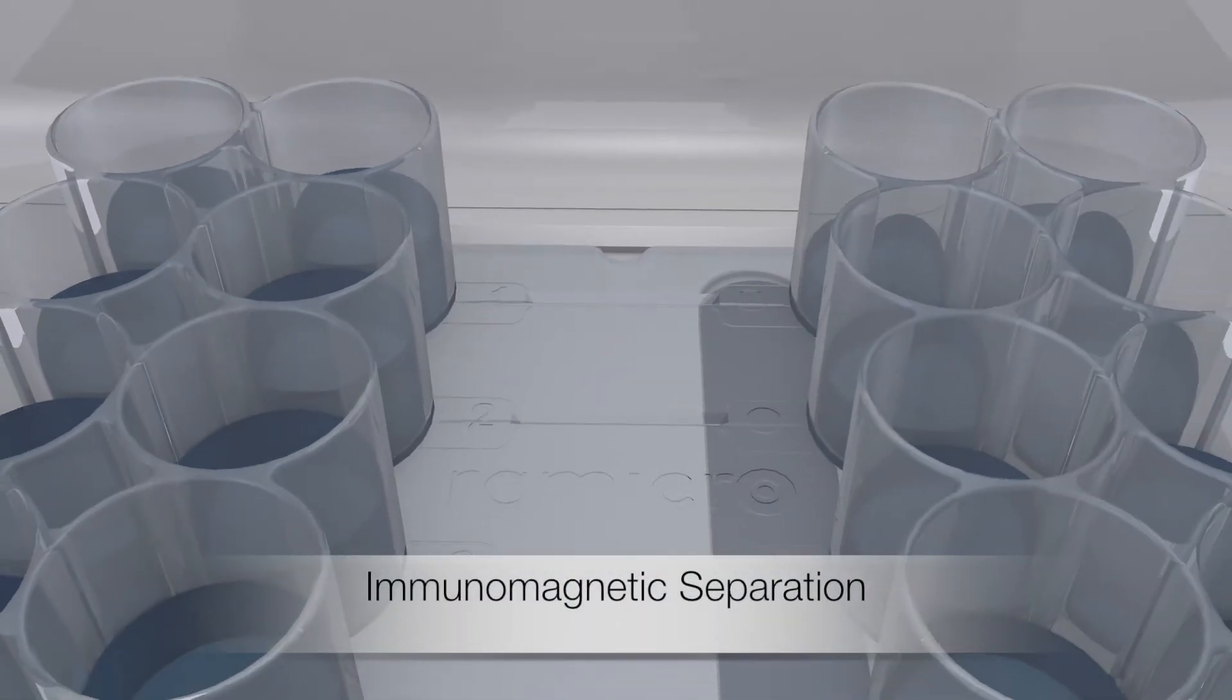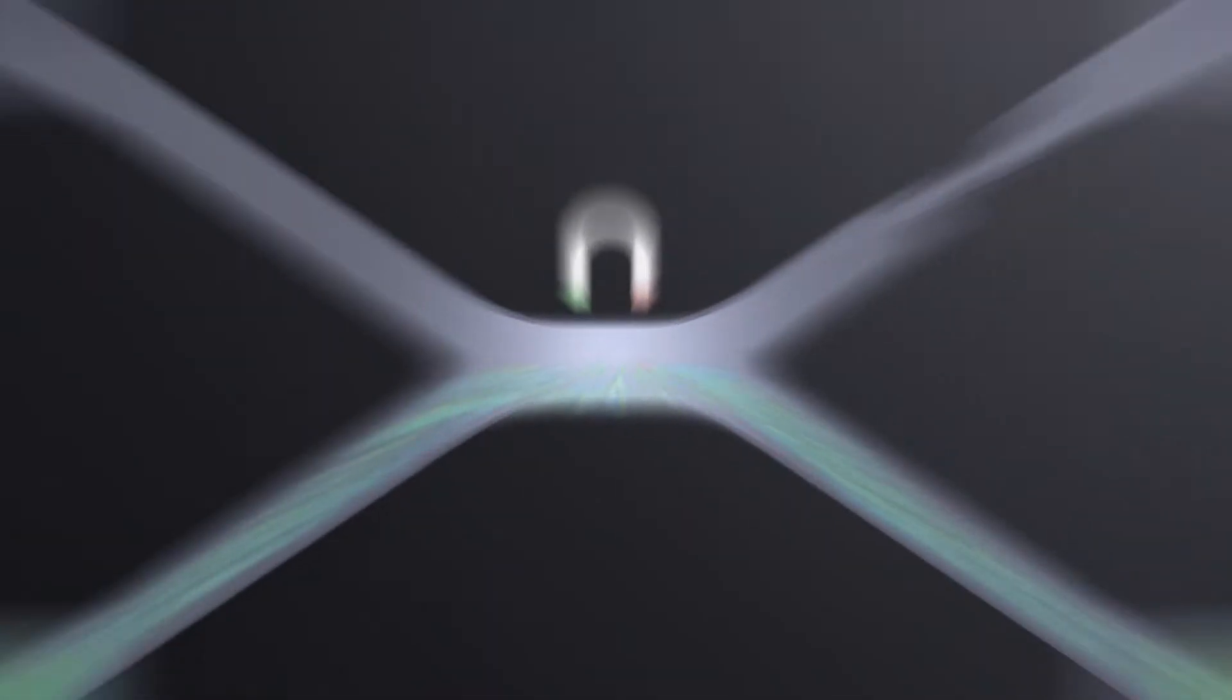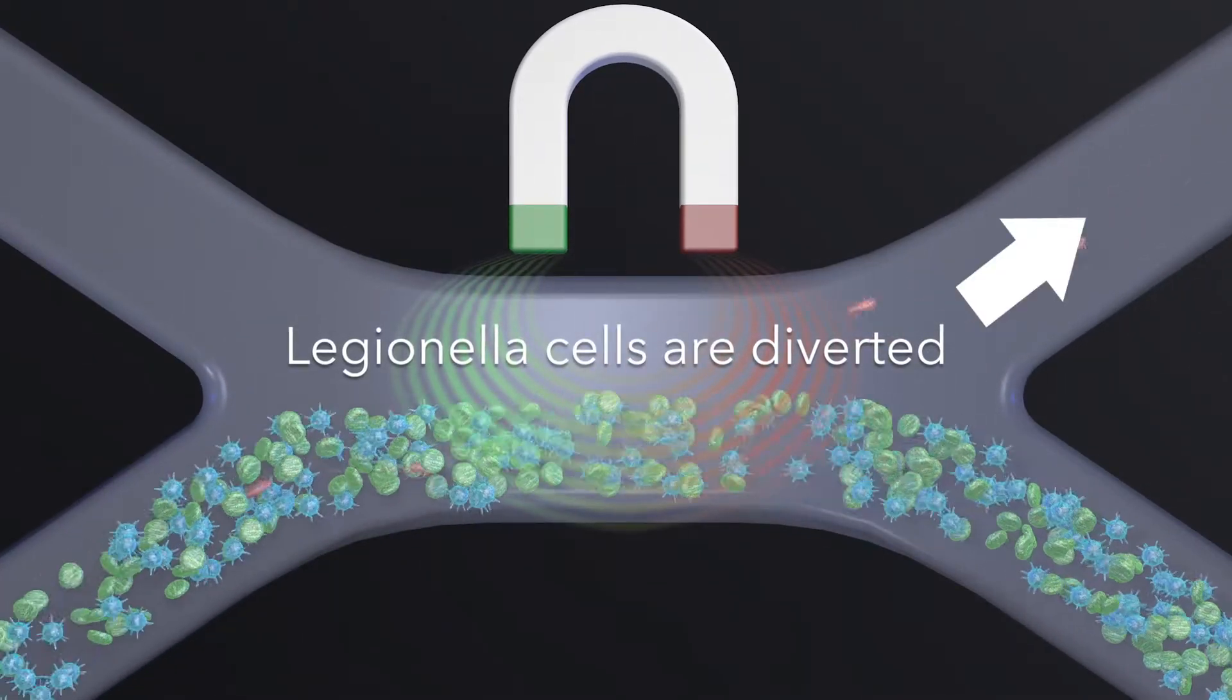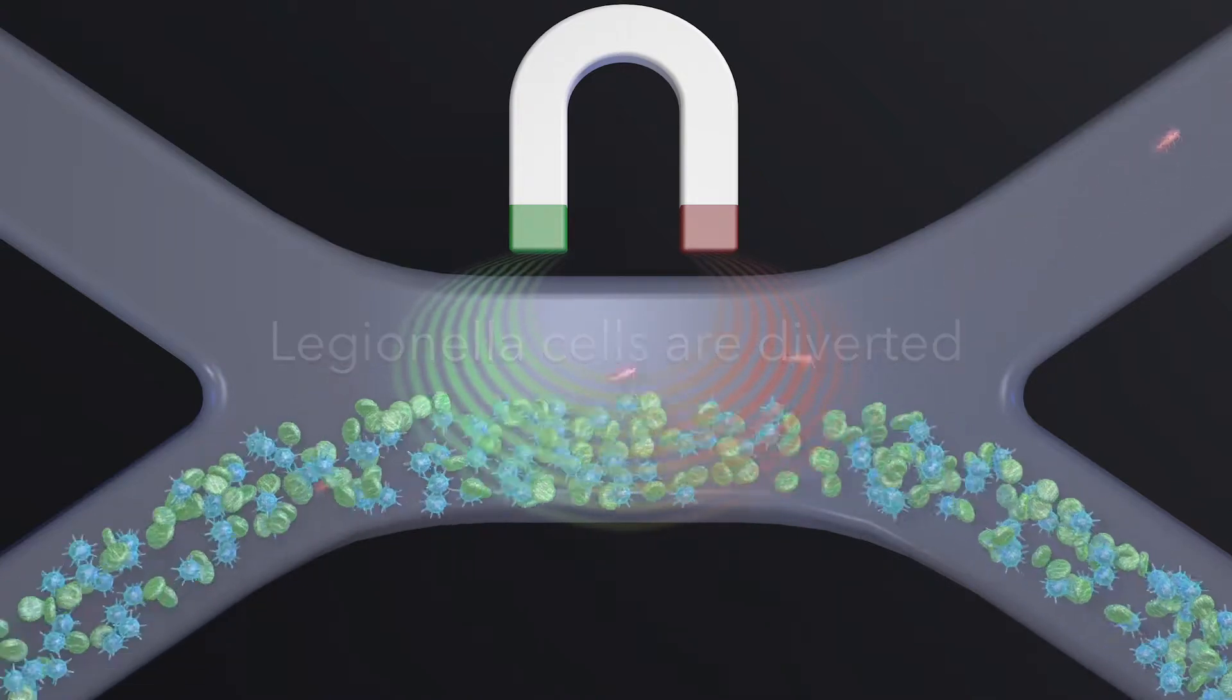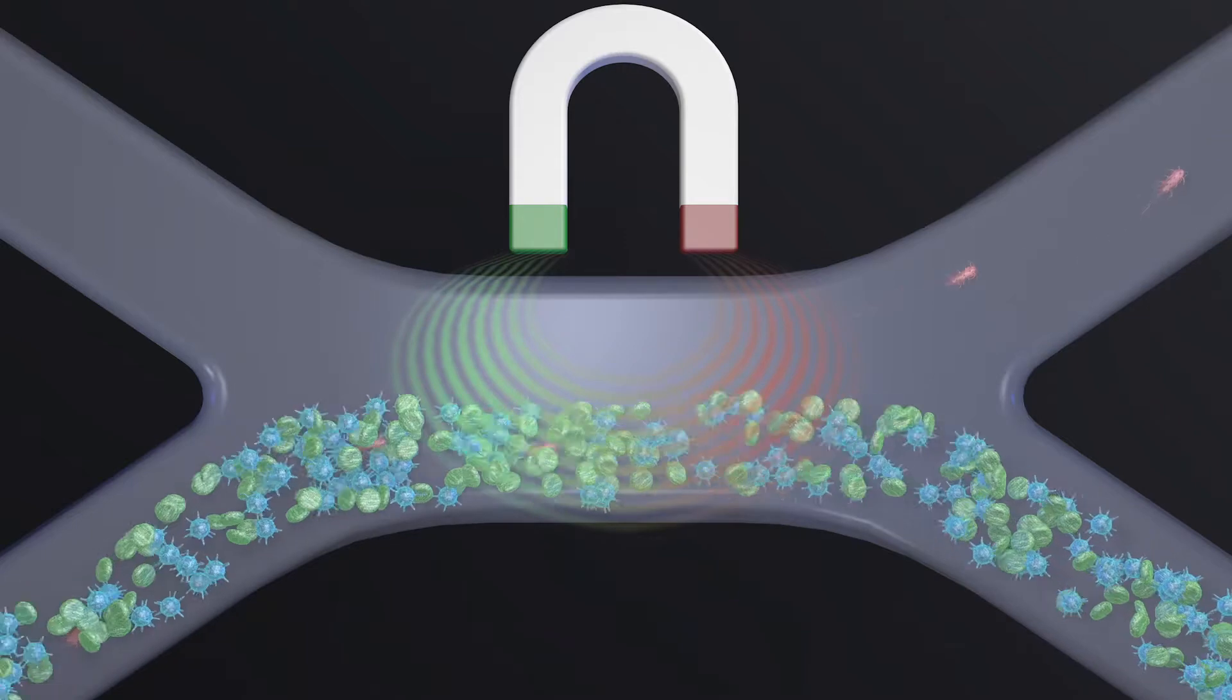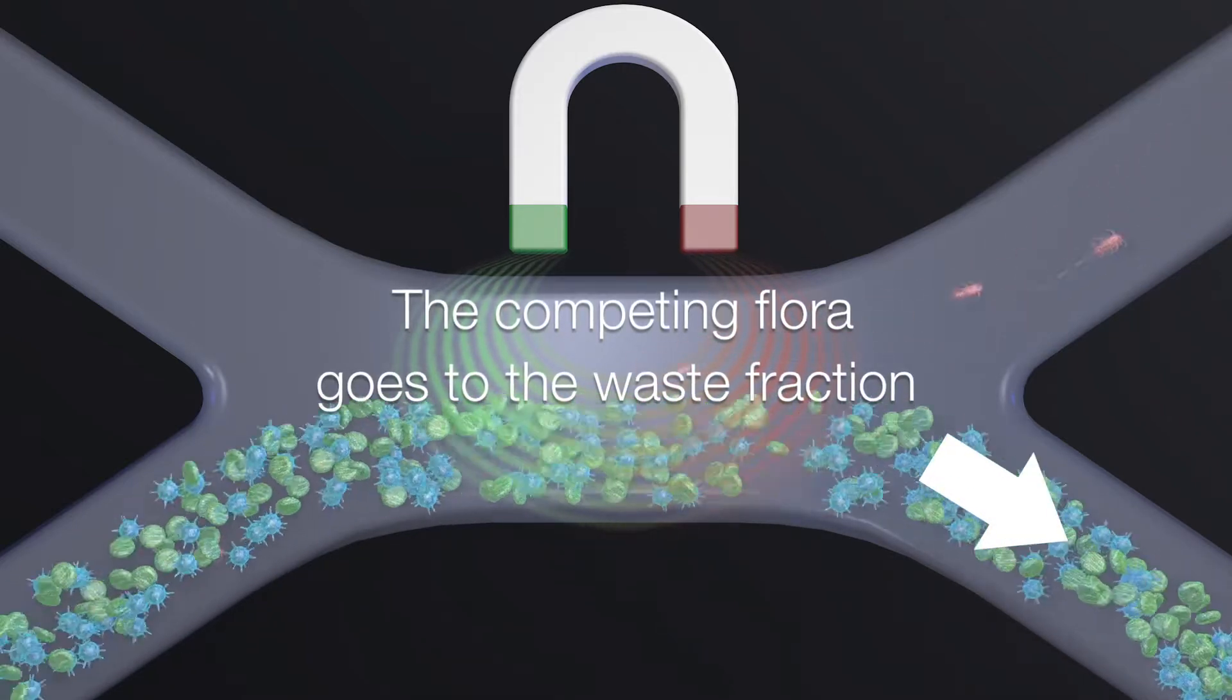The sample passes through a narrow channel in the cartridge. During this process a magnet is lowered down and thereby diverts the Legionella cells which are bound to magnetic particles. At the same time more than 95% of the competing flora originally present in the sample is directed to the waste fraction.